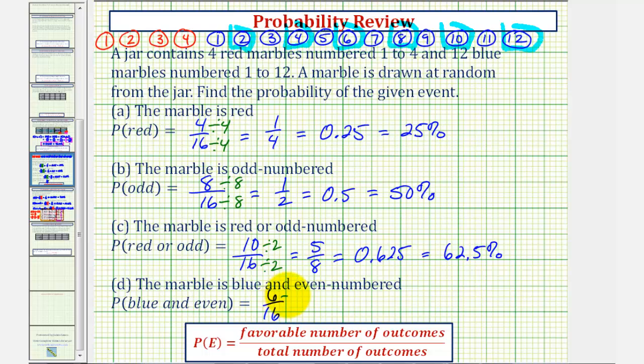So the probability of a marble being blue and even is 6/16. Simplifying, common factor of two, this gives us 3/8, which would be equal to 0.375 or 37.5%. I hope you found this helpful.